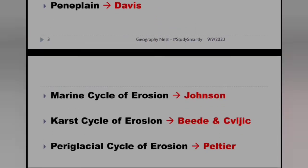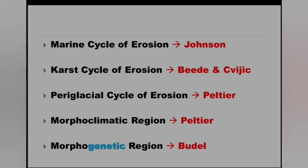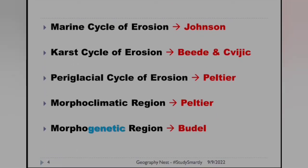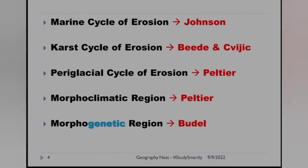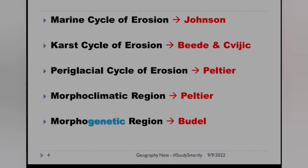Let's move to the next slide. Here you can see that Johnson was associated with marine cycle of erosion. Next, karst cycle of erosion — this is given by B.D. and C.V.G. combinedly. Periglacial cycle of erosion — Peltier.